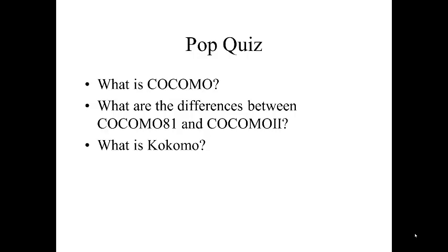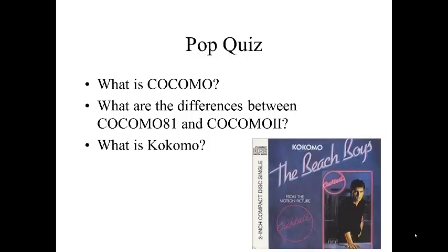COCOMO 81 is the original COCOMO model, and COCOMO 2 is the updated model that takes into account new types of system development such as object-oriented programming, component-based systems, COTS, and glue code. It also takes into account database-intensive systems not discussed in COCOMO 81. COCOMO with a K is actually a song by the Beach Boys from 1988, so the song is in fact named after the software engineering model.